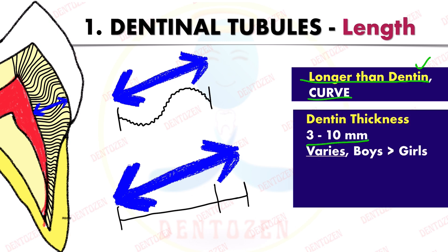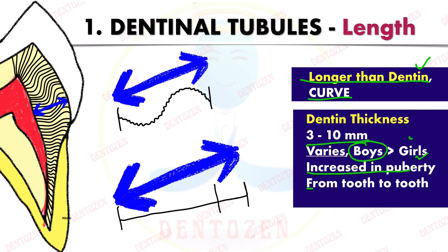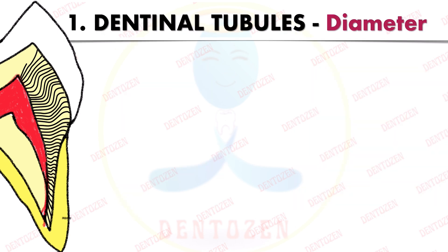The thickness of dentine is three to ten millimeters and is variable — more in boys than in girls, increases during puberty, and differs for different types of teeth. Even within the same tooth, it can differ on different surfaces — for example, the buccal surface dentine may be thicker than on the lingual surface.